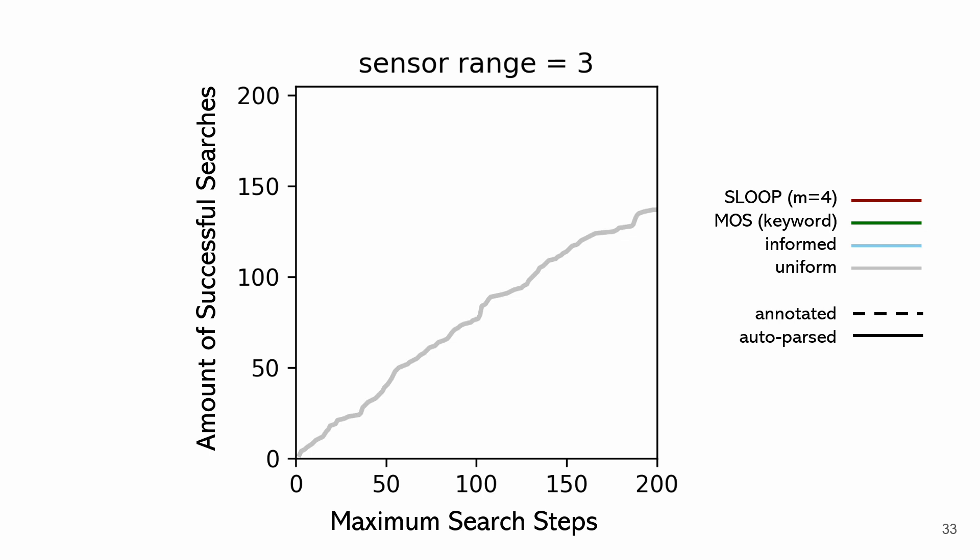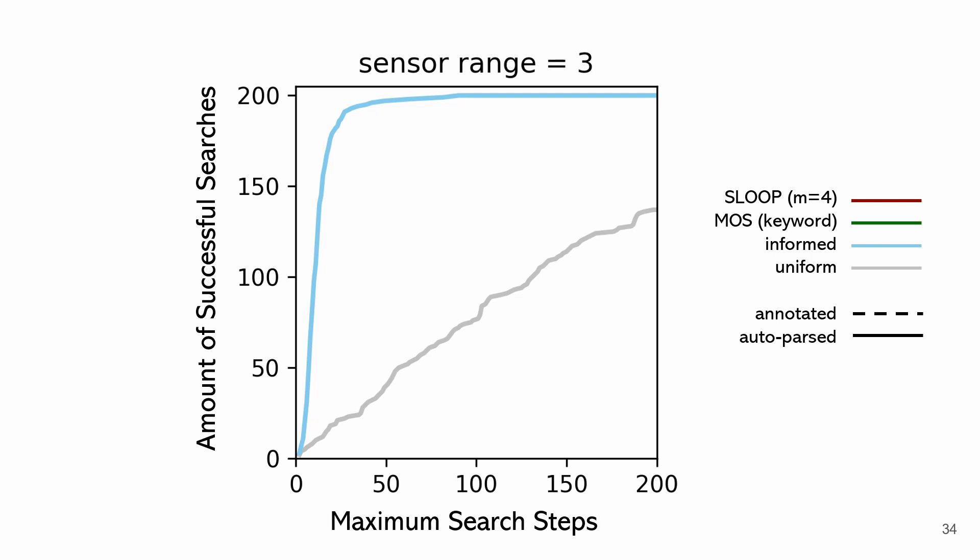Our main result shows the number of successful search trials on the y-axis versus the maximum number of search steps on the x-axis. Under uniform belief, roughly 40 search trials are successful within 50 steps, and above 75 within 100 steps. The 'informed' condition is an upper bound where the agent knows the target location with small Gaussian noise. The keyword baseline significantly improves over uniform, with a steeper slope and higher total completion — roughly 150 trials completed within 100 steps.